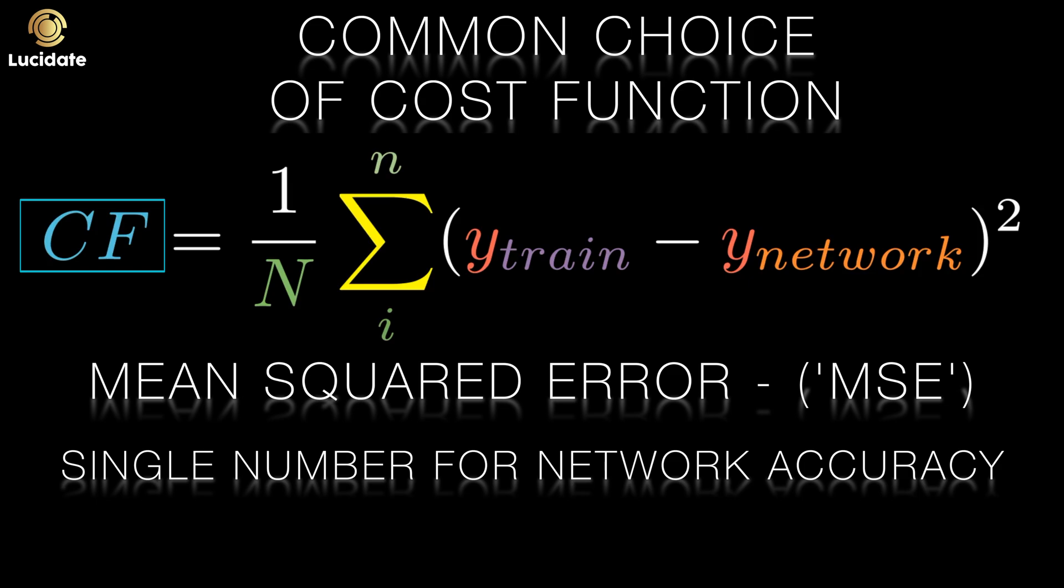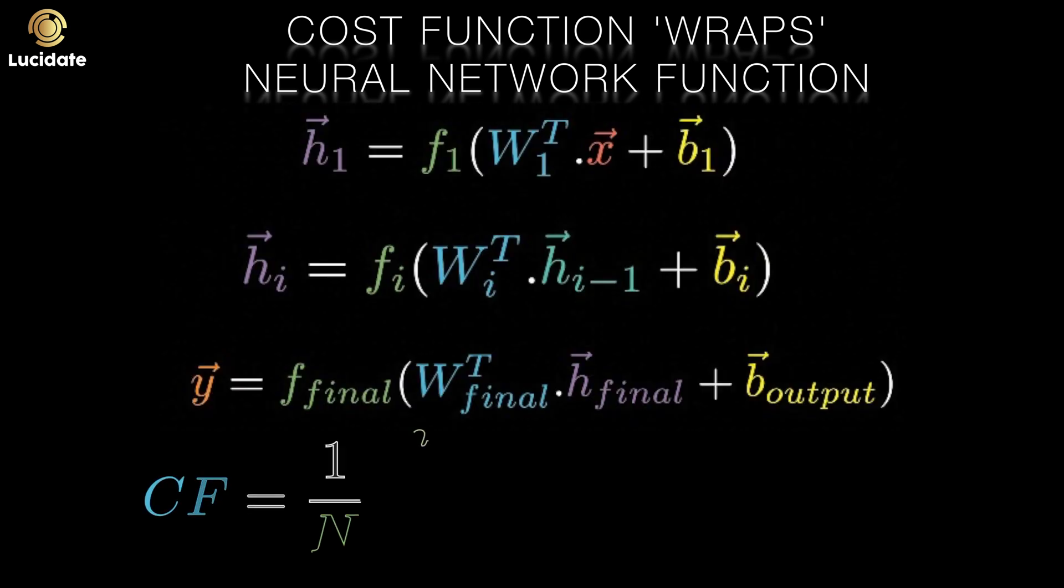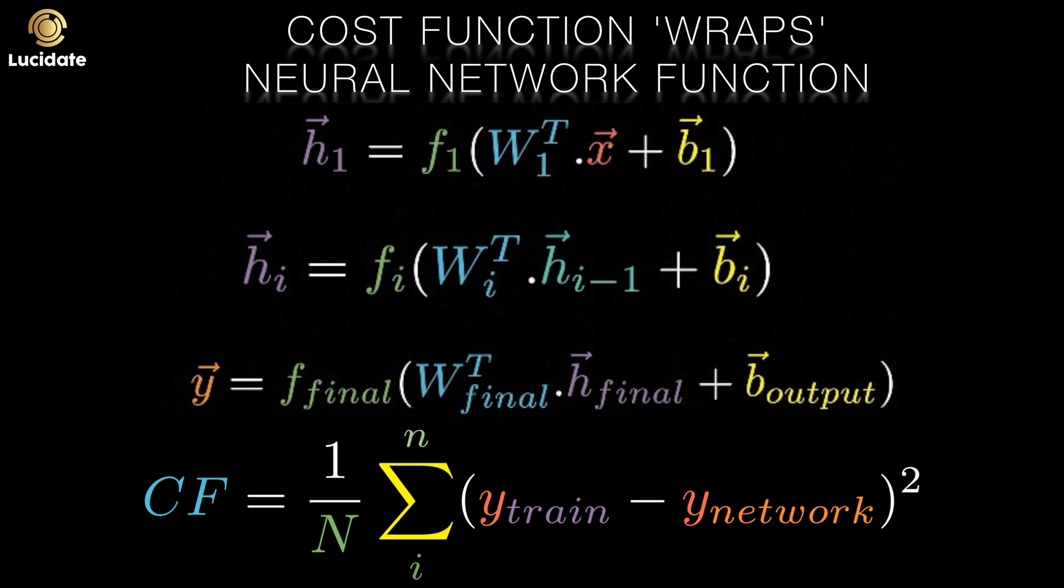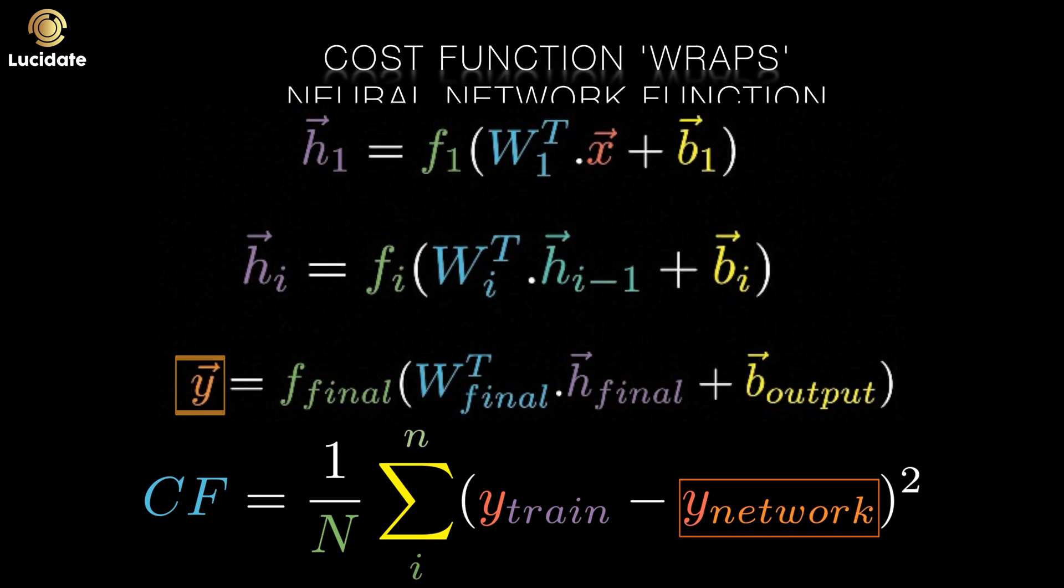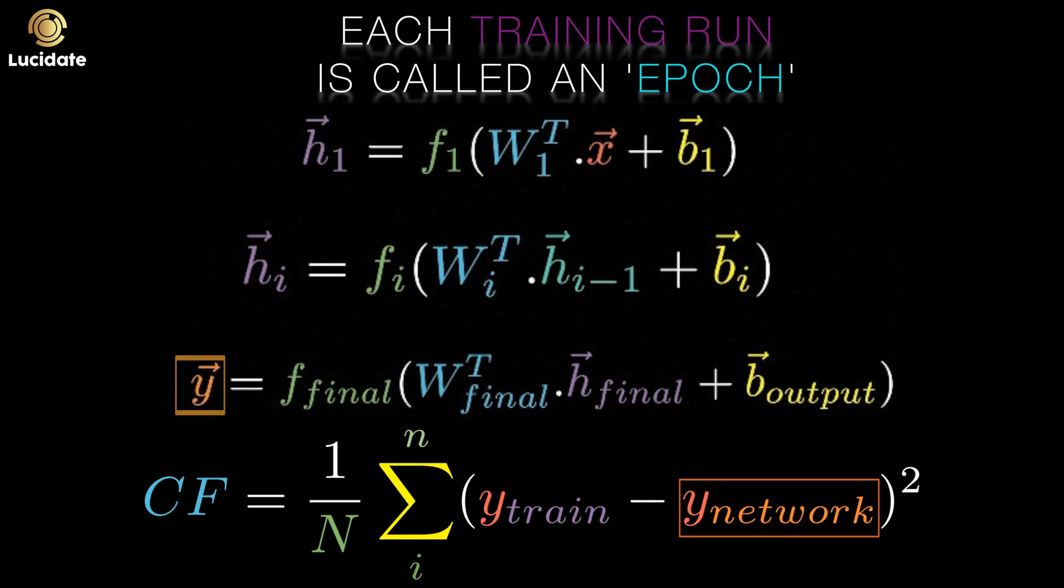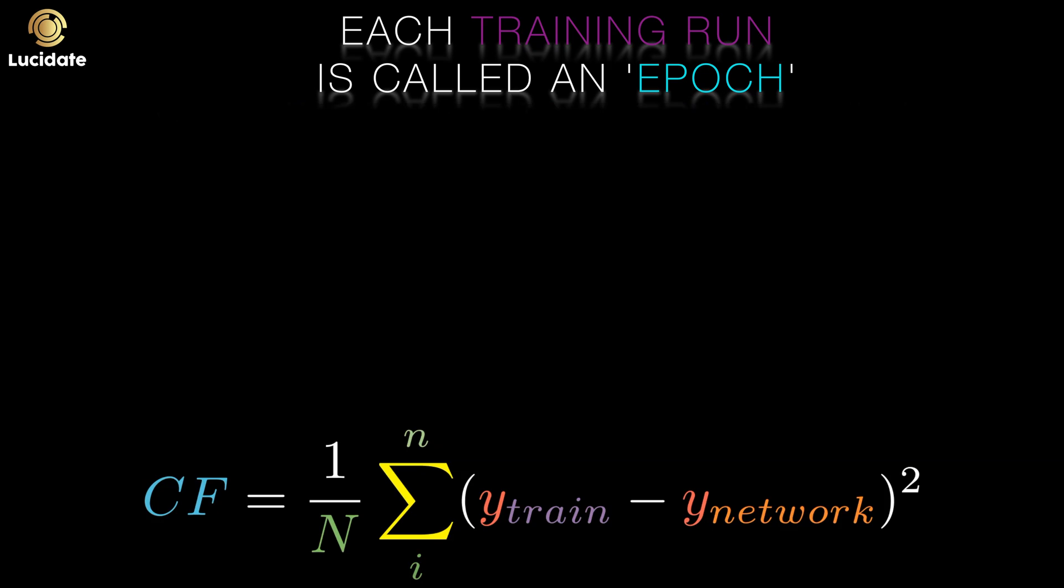Remember also, that network is a function, mapping inputs to outputs. Y vectors from X vectors. If we decide that our cost function is the mean of the squared errors, or MSE, that becomes the equation on your screen, where Y-train is the correct output from our training set, and Y-network is what our network calculated. You'll hear these training runs referred to as epochs. And at the end of every epoch, we can calculate the aggregate cost.